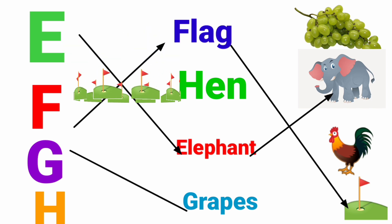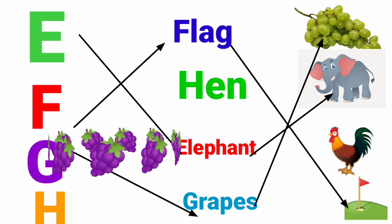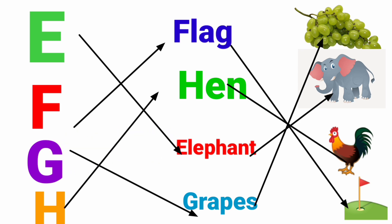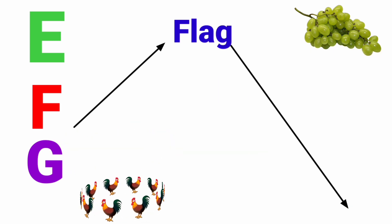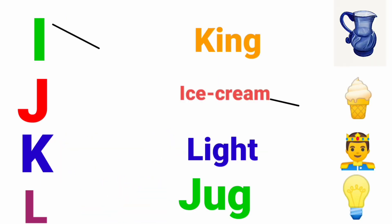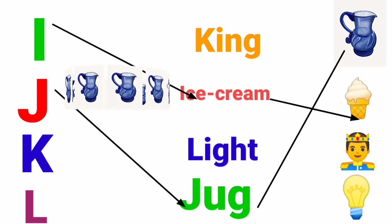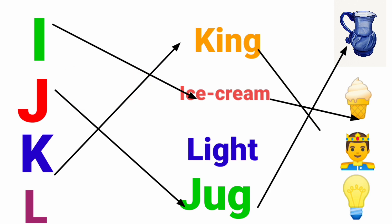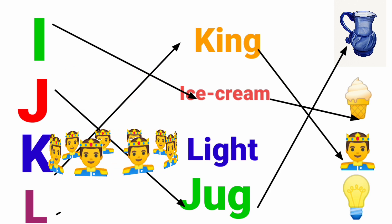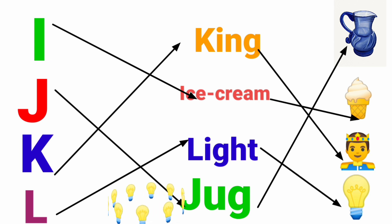F for Flag. G for Grapes. H for Hen. I for Ice Cream. J for Jug. K for King. L for Light.